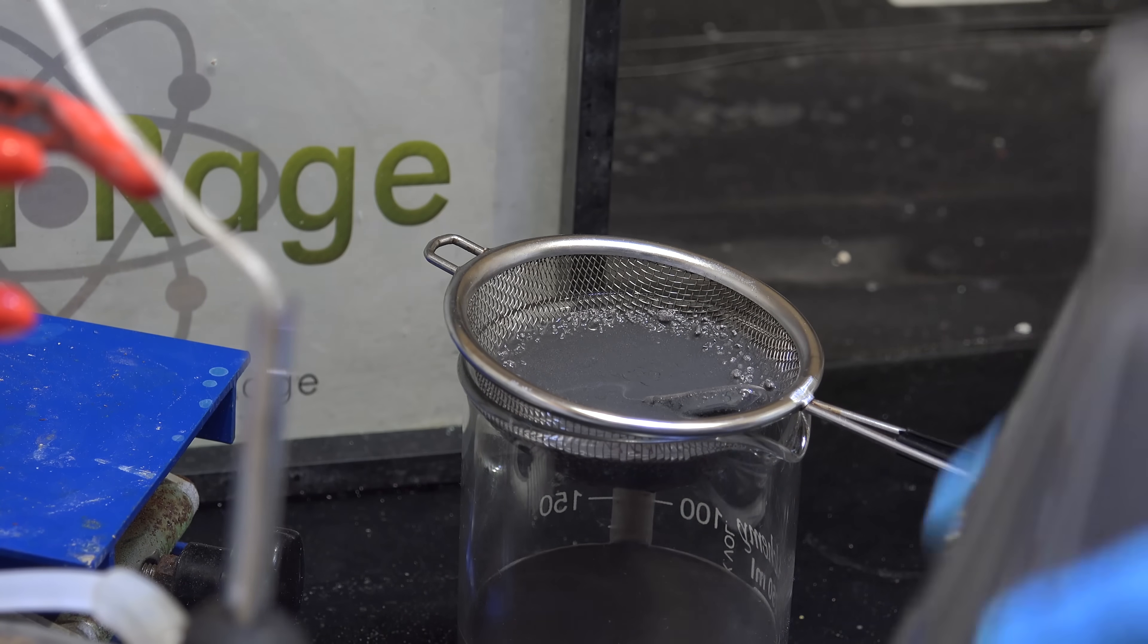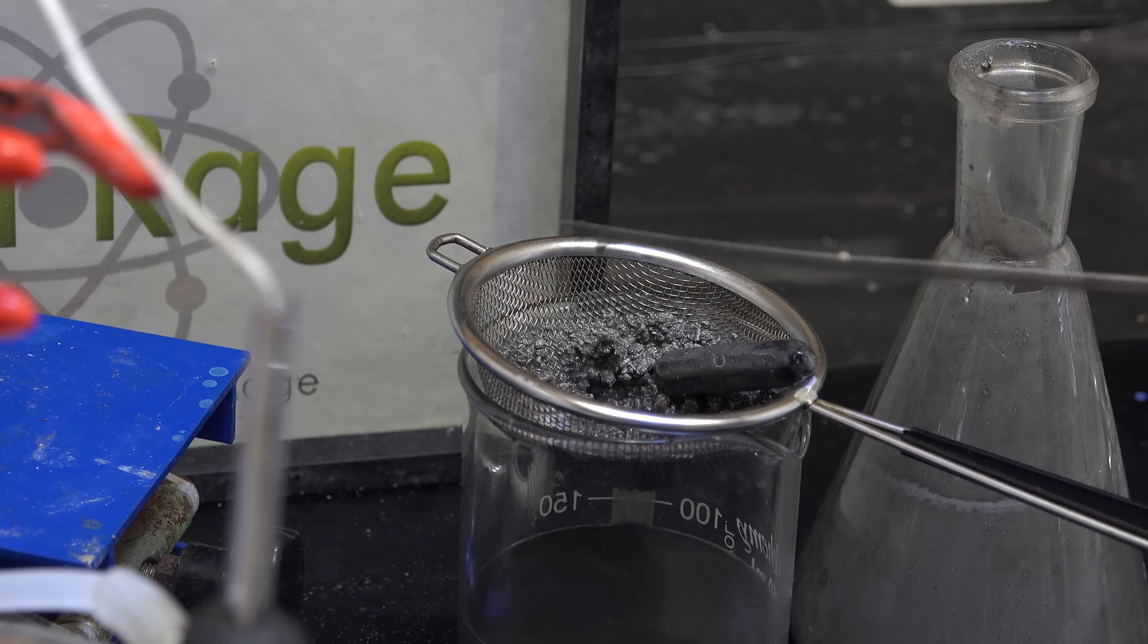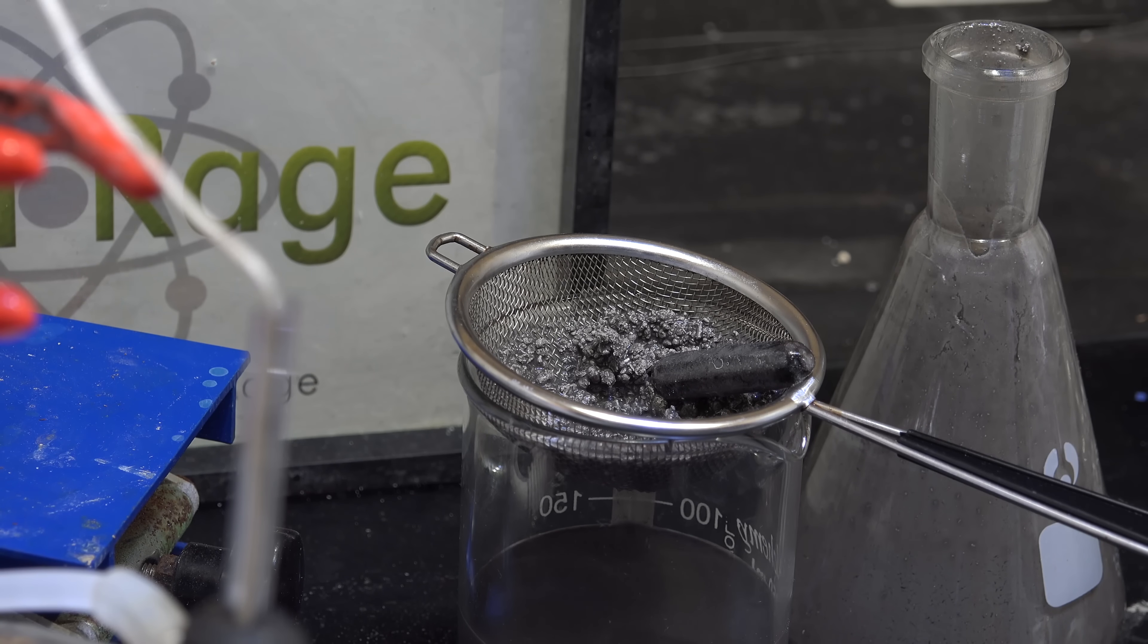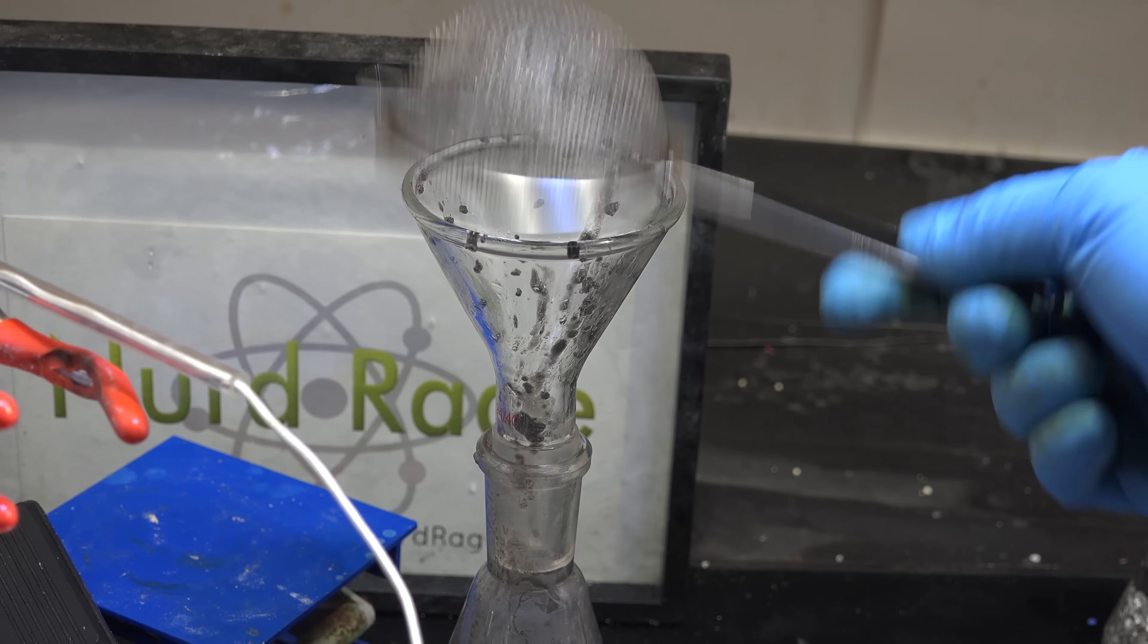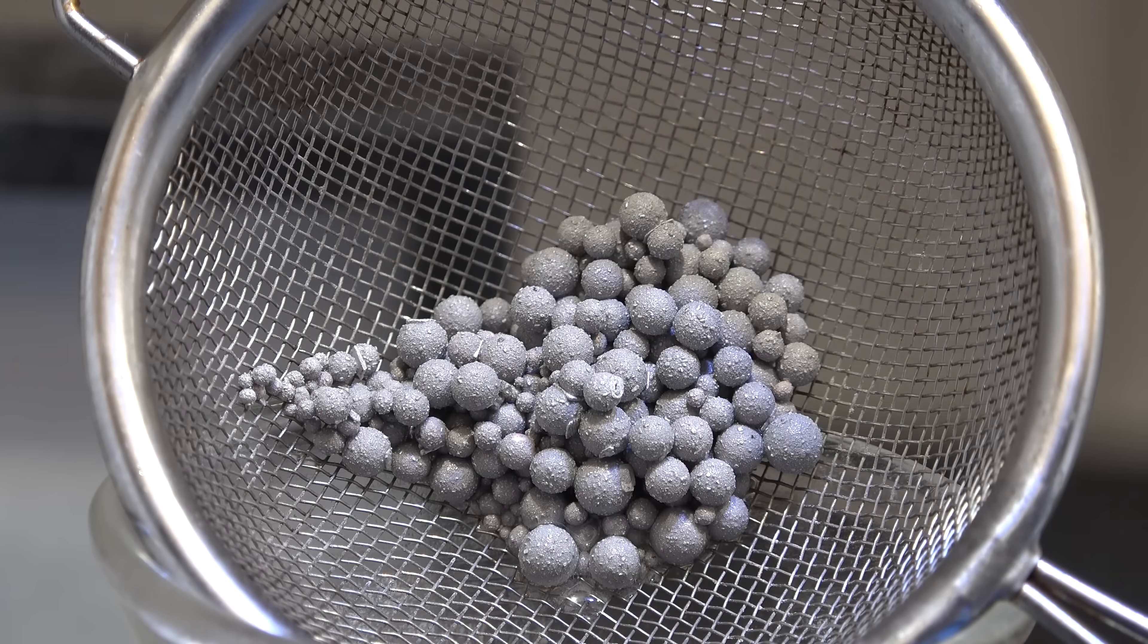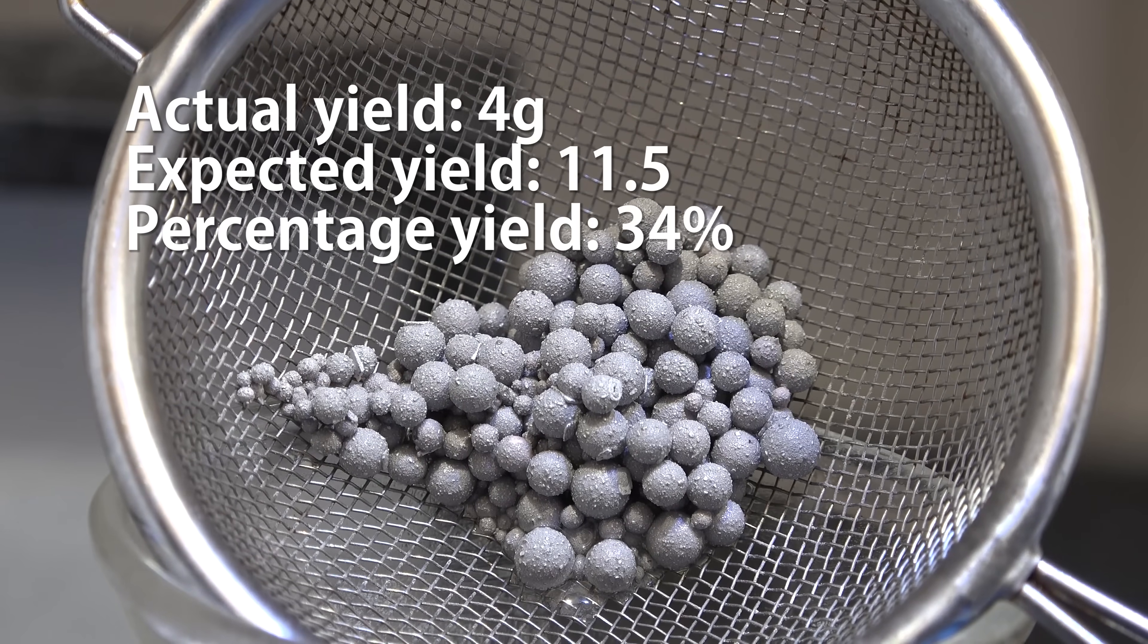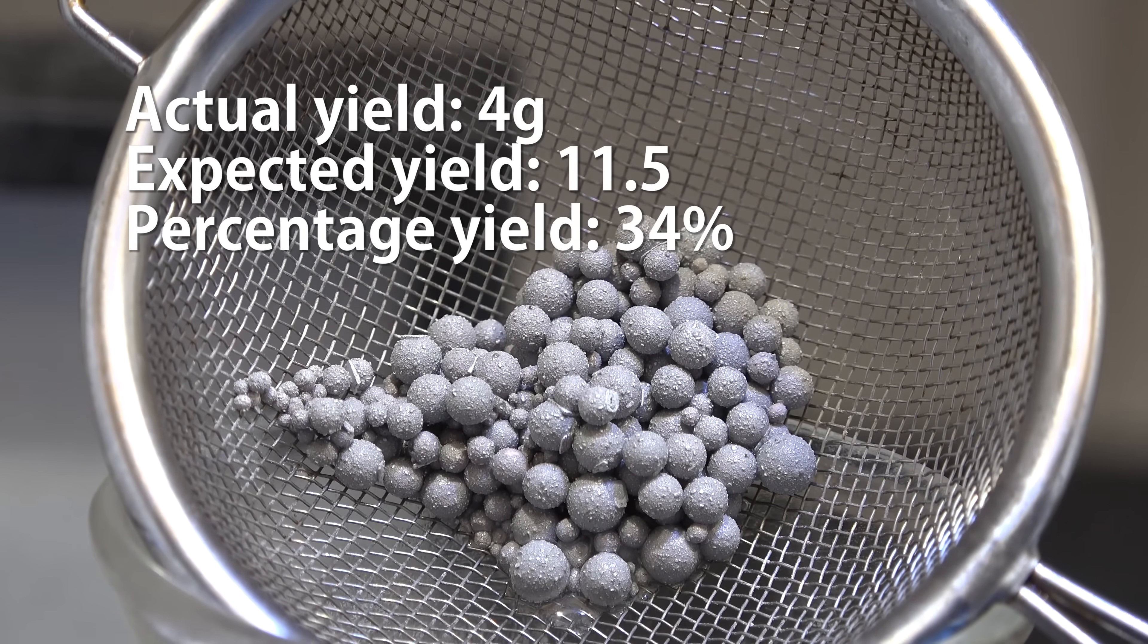Pouring through the sieve this time it still has the coalescence problem as in my previous video and produced small sodium spheres. So it's not a one time error, tea tree oil might have sodium coalescence problems. Anyway I poured the sodium back in the flask and performed the dioxane separation process to try and get a sodium yield. Recovering the sodium this is all I got. I measured the mass to be about 4g of an expected 11.5g for about 34%. So tea tree oil does work, just not very well.